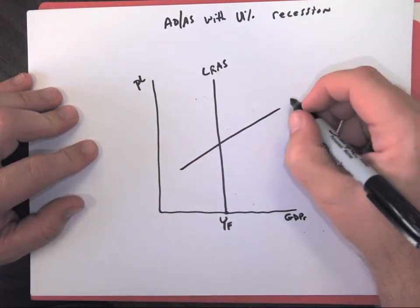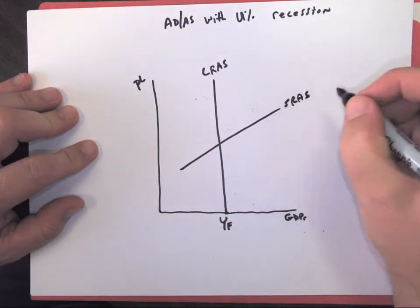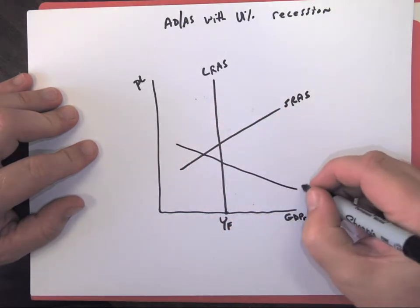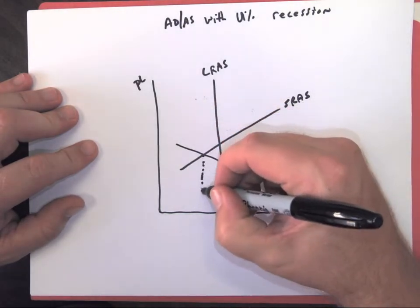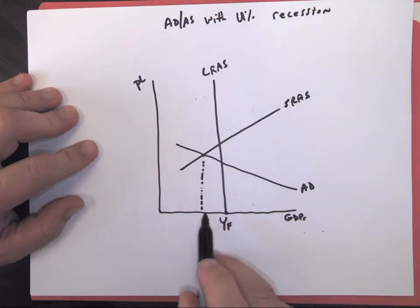we are going to have our short-run aggregate supply and our aggregate demand cross to the left of full employment. That means less than full employment.